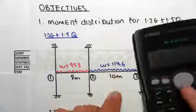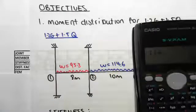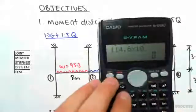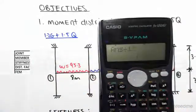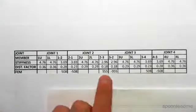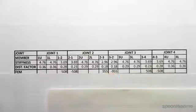Its fixed end moment will be W which is 114.6 times by L squared which is 10 squared divided by 12, so 955. Okay, so we have positive 955 and negative 955. So that is the fixed end moments.